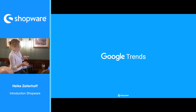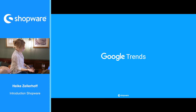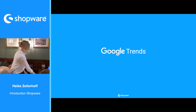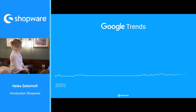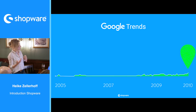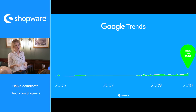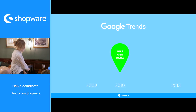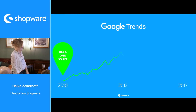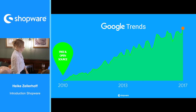Let's have a quick look at our history. We started quite decently, but everything changed — we had a real turning point in 2010 when we decided to go completely open source. And then afterwards the development was huge, until now where we've reached our peak of 60,000 installations.